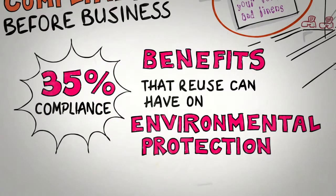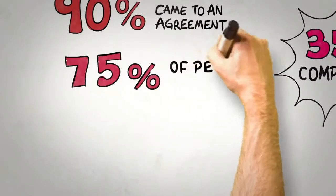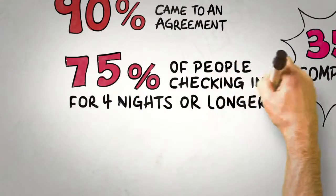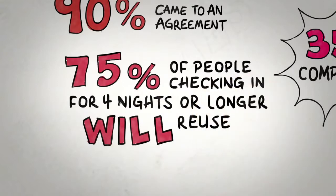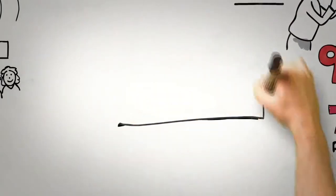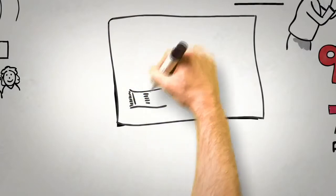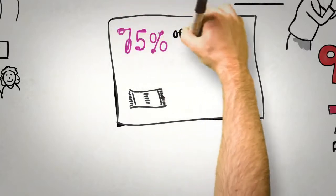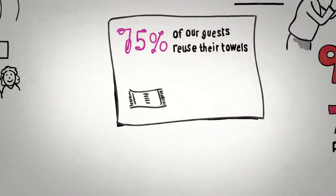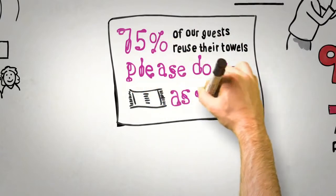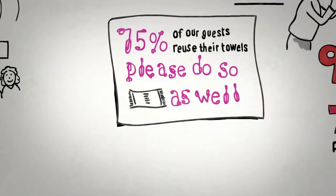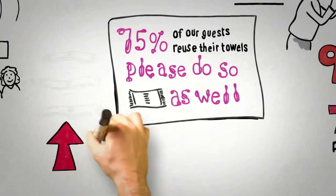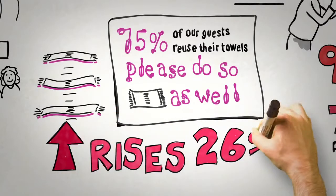But could there be an even more effective way? Well, it turns out that about 75% of people who check into a hotel for four nights or longer will reuse their towels at some point during their stay. So what would happen if we took a lesson from the principle of consensus and simply included that information on the cards and said that 75% of our guests reuse their towels at some time during their stay, so please do so as well? Well, it turns out that when we do this, towel reuse rises by 26%.